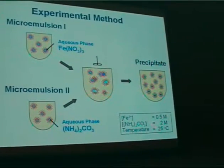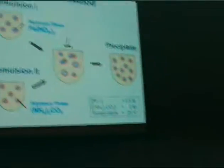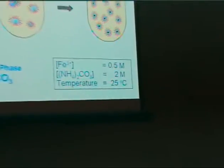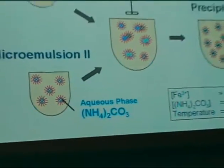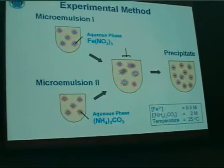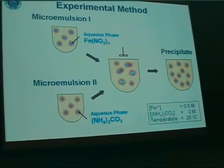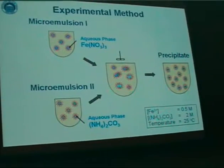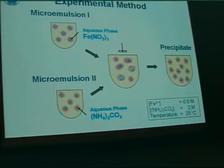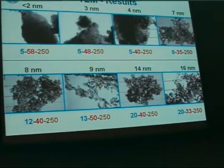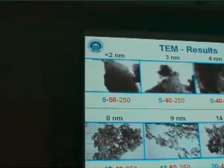We leave this under stirring at 25 degrees for three hours, at which point the precipitation should have come to an end. We then add acetone and water to break up the micelles and remove the surfactant from the precipitate. After this we dry the material in air at 300 degrees for 16 hours, applying a temperature program. The resulting crystallites — this is non-supported material — are shown here.